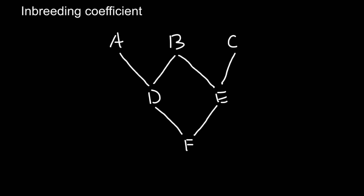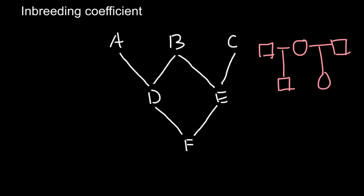Then individual D and E would produce individual F. So now we have to find how inbred individual F is. The same line diagram we can represent as another variant of a pedigree — a female with two different males whose children then produce progeny F. So what we see here on the left is the same as what we see on the right.